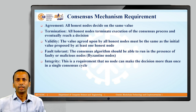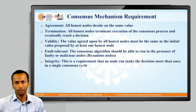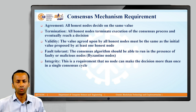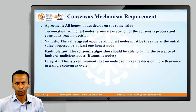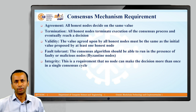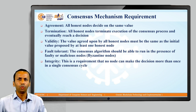There are consensus mechanism requirements. The first is Agreement — all honest nodes decide on the same value, meaning all nodes in the blockchain network must agree on a common value. The second is Termination — all honest nodes terminate the execution of the consensus process and eventually reach a decision.